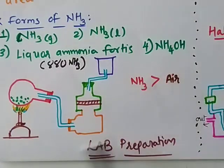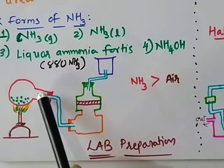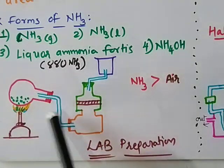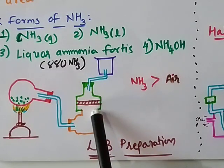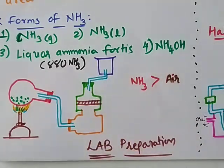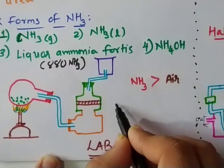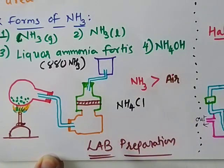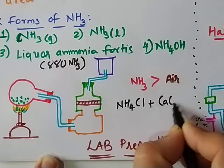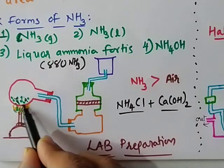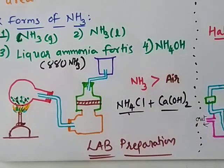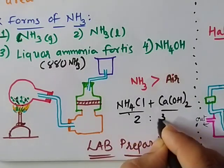Moving to the laboratory preparation of ammonia: in the setup we use a round-bottom flask kept tilted — the reason will be explained shortly. There is a collecting unit with a drying agent. For preparation, we use two chemicals: NH4Cl (or any ammonium compound) and an alkali — Ca(OH)2. The mixture of NH4Cl and Ca(OH)2 is kept in the flask in a proportion of 2:3 by weight.